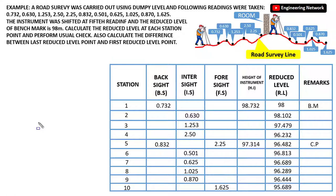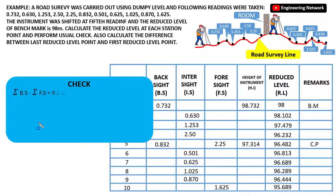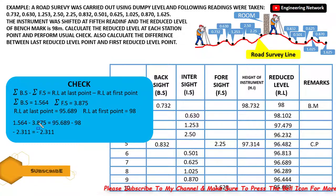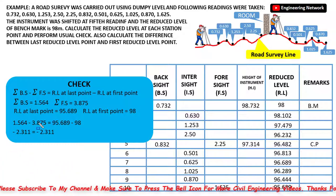It is also required to perform a check to verify the results. The check is: sum of back sight minus sum of fore sight must equal reduced level at last point minus reduced level at first point. The sum of back sight is 1.564 and sum of fore sight is 3.875. The reduced level at the last point is 95.689 and at the first point is 98. So 1.564 minus 3.875 must equal 95.689 minus 98. Both sides give minus 2.311, which indicates our result is correct.